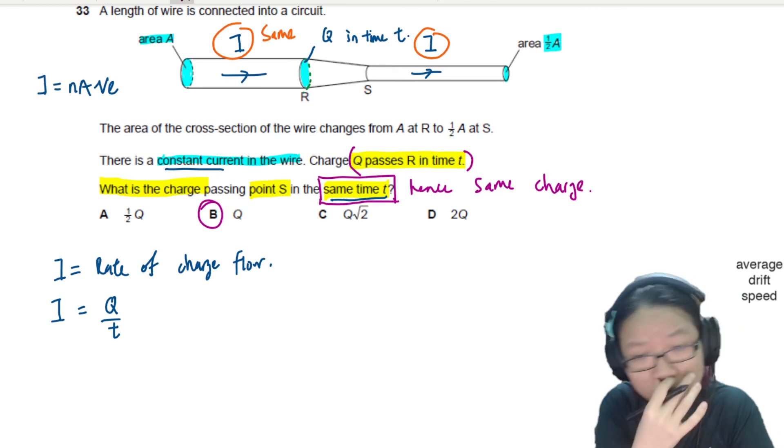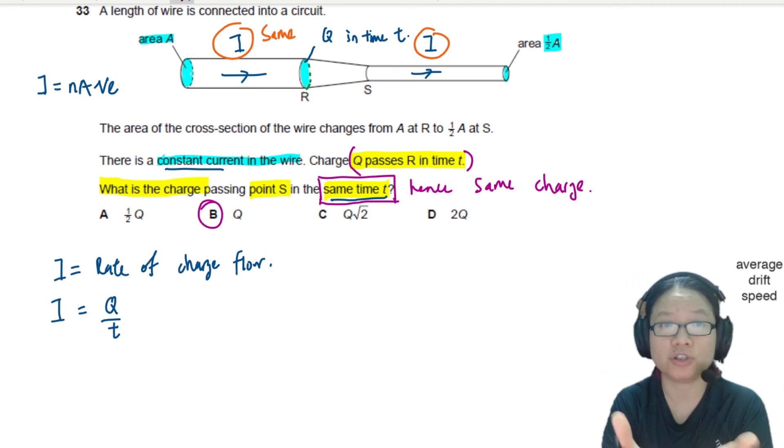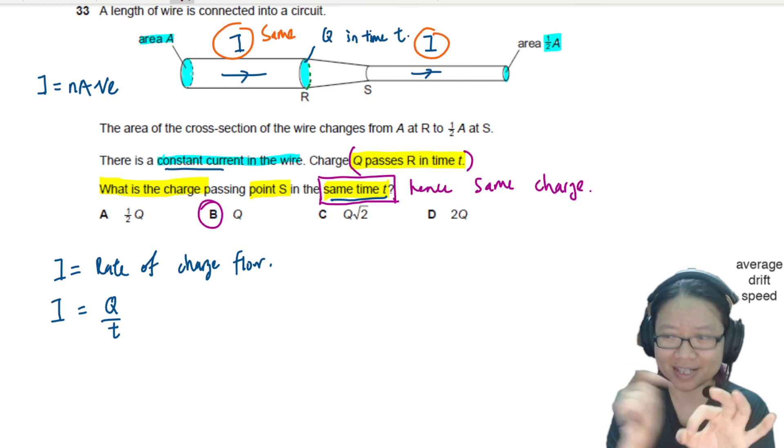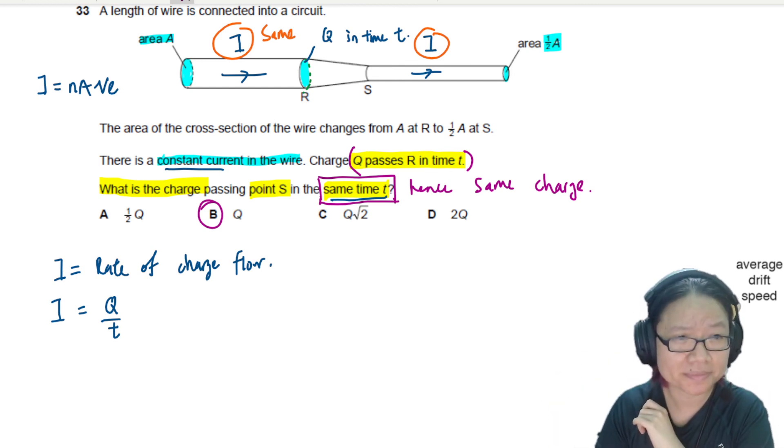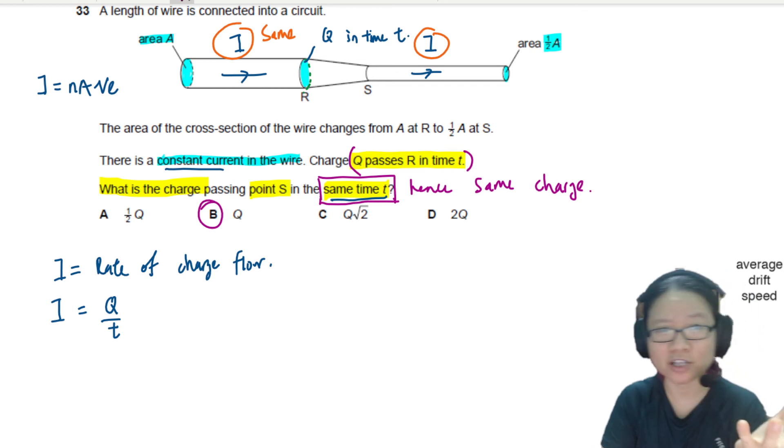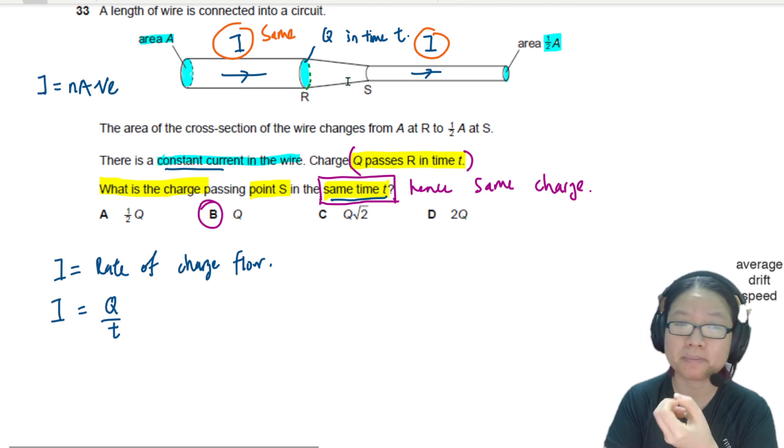This is Cambridge also testing whether you really understand what current is. So current, as you have watched in the previous video, is the amount of charge passing through a point in the circuit in the given time. And unless there is a branch for the electrons to run away or for extra electrons to be added, the amount of charge flow is the same per unit time because the current is the same.